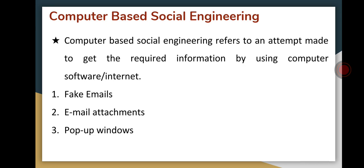Another technique used in computer-based social engineering is email attachments, which are used to send malicious code to a victim's system that will automatically get executed. For example, viruses, Trojans, and worms are included in attachments. When the user clicks on the email attachment, the code executes automatically and viruses or worms are inserted into the system.